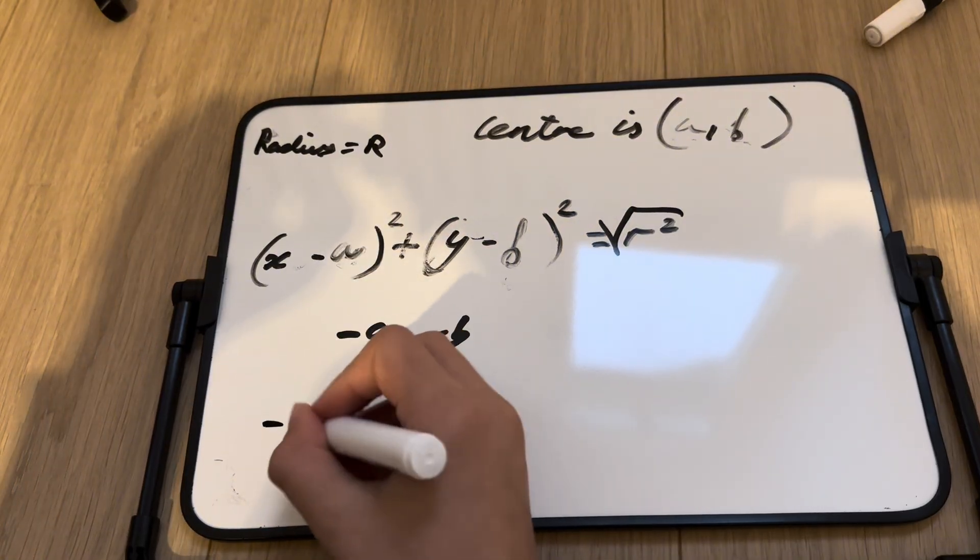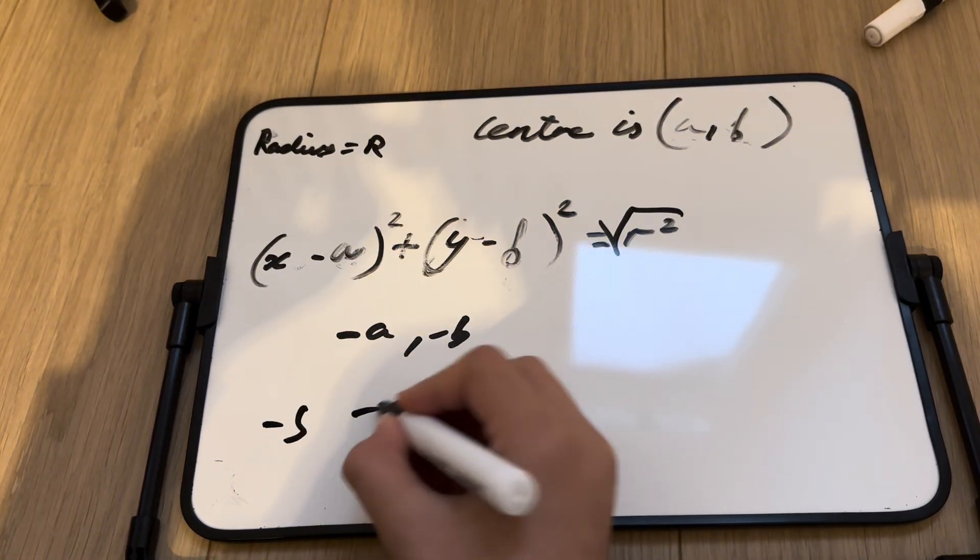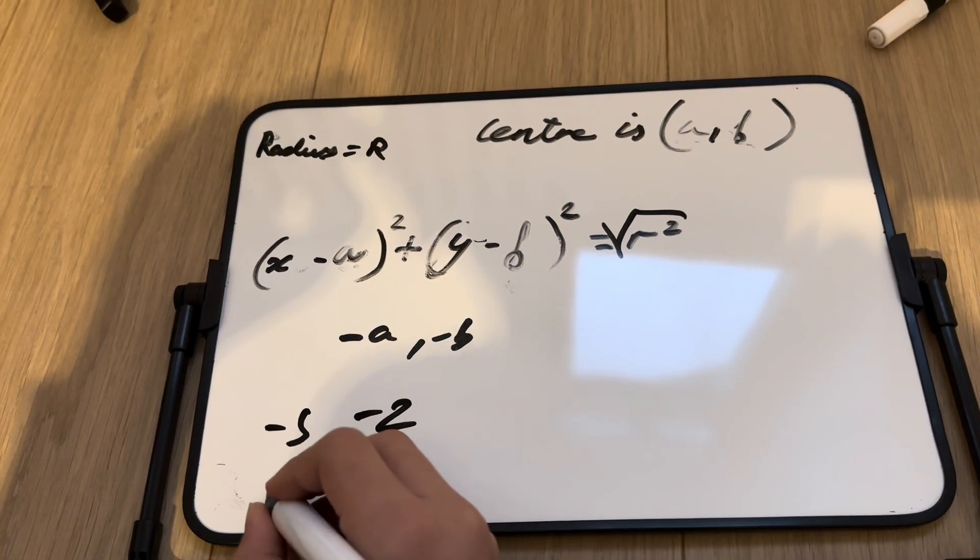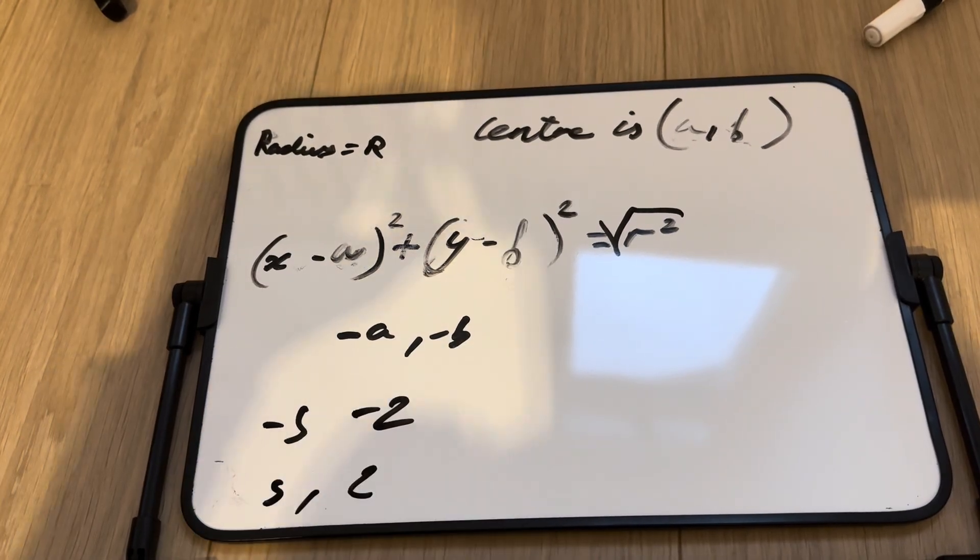So, for example, for this one, negative 5, negative 2, then we add the negative, so we get 5 comma 2, and that would be the center.